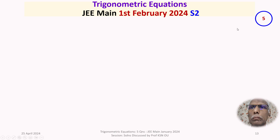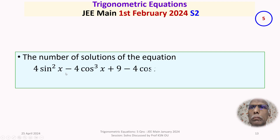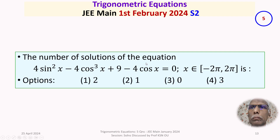The fifth and last question appeared in the JEE Main exam held on 1st February 2024 in the second shift. The question is: the number of solutions of 4sin²x - 4cos³x + 9 - 4cosx = 0, where x ∈ [-2π, 2π], is — with four options given.